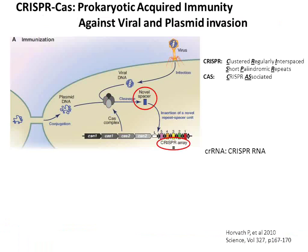So what is CRISPR-Cas? CRISPR-Cas is a prokaryotic acquired immunity against viral and plasmid invasion. In the genome there is a CRISPR-Cas locus. CRISPR stands for clustered regularly interspaced short palindromic repeats, shown as the black triangles here — those are the repeats. And Cas refers to the CRISPR-associated genes.